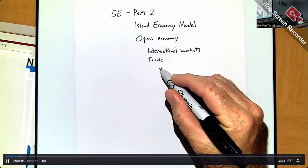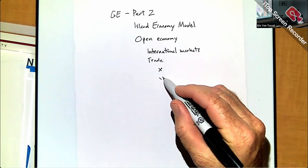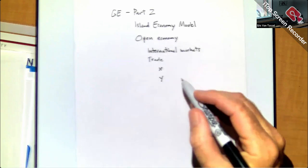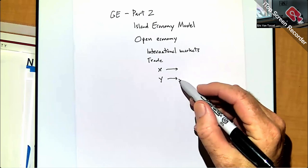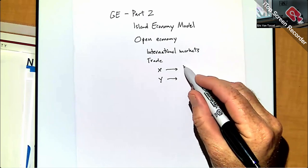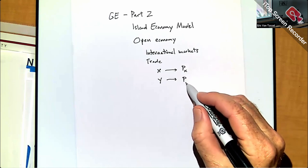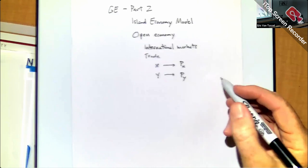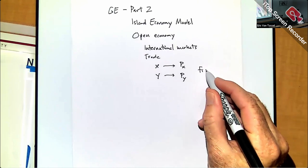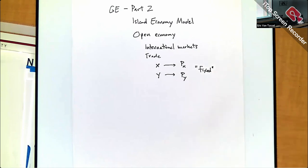If we have these two types of consumption goods X and Y, in the international market these two goods trade at some international prices PX and PY, and these are fixed from the point of view of the individual country we're looking at.